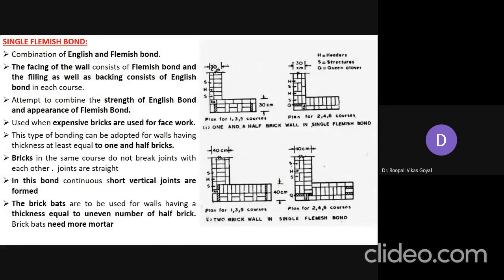Single Flemish bond is a combination of English bond and Flemish bond. The facing of the wall looks like a Flemish bond, while the filling and backing consist of English bond in each course. This attempts to combine the strength of English bond with the better appearance of Flemish bond. It is generally utilized when expensive bricks are used for face work.